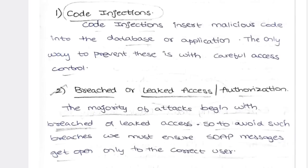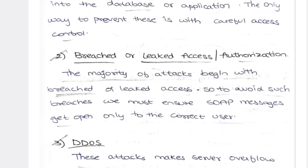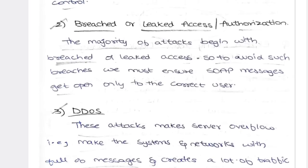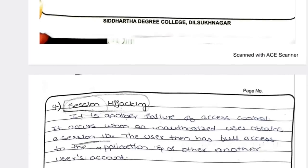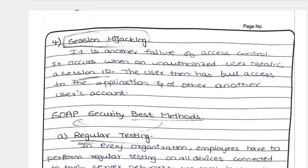The second SOAP risk is breached or leaked access — when your data is disclosed with unauthorized persons, by mistake or otherwise, that data is leaked and is not allowed. Next is DDoS — Distributed Denial of Service, which we discussed in unit 1. It involves bulk messages that slow down and crash system configuration.